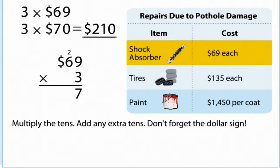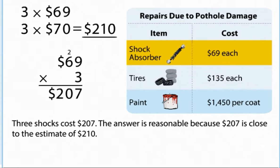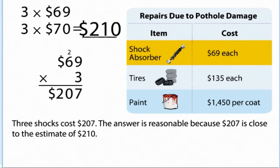Multiply the tens. Add any extra tens. Don't forget the dollar sign. Three shocks cost $207. The answer is reasonable because $207 is close to the estimate of $210.